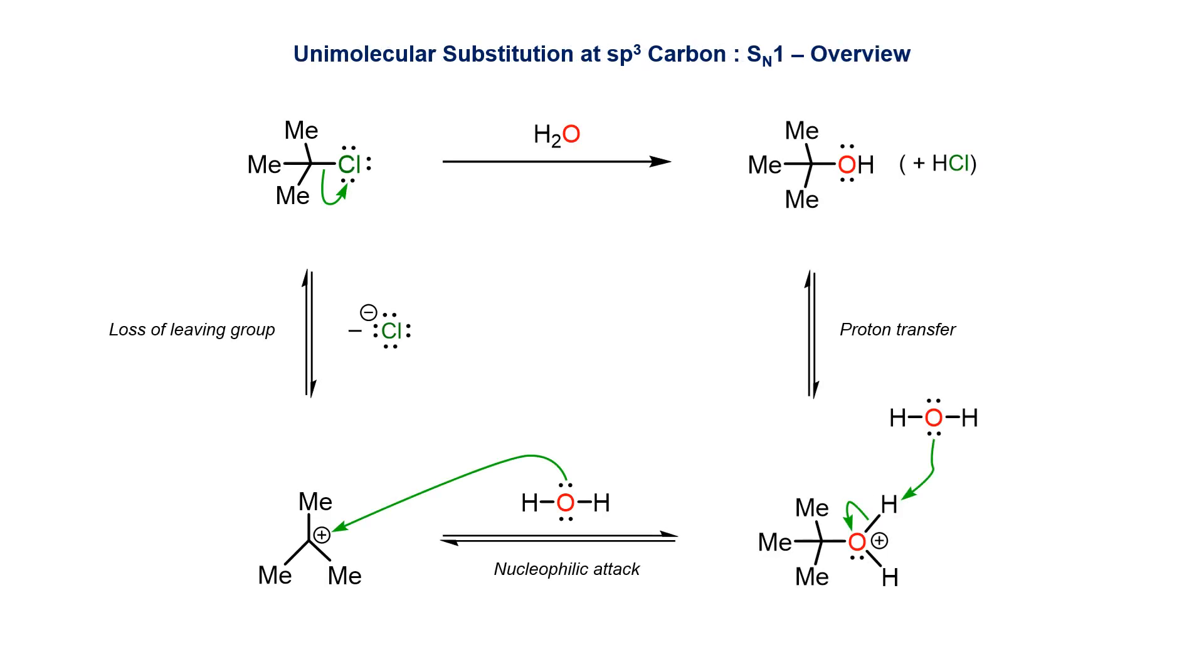When a good leaving group such as a halide is present on a suitable substrate, the polar solvent promotes loss of the leaving group to produce a carbocation. The carbocation is flat, sp2 hybridized, and in need of electrons.